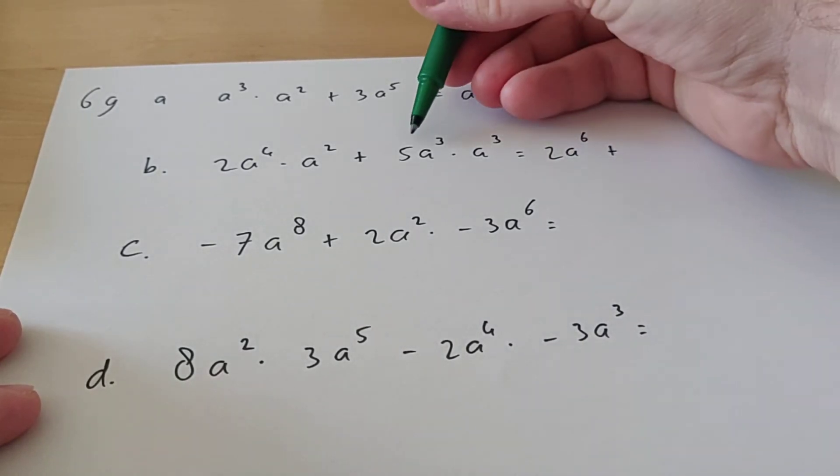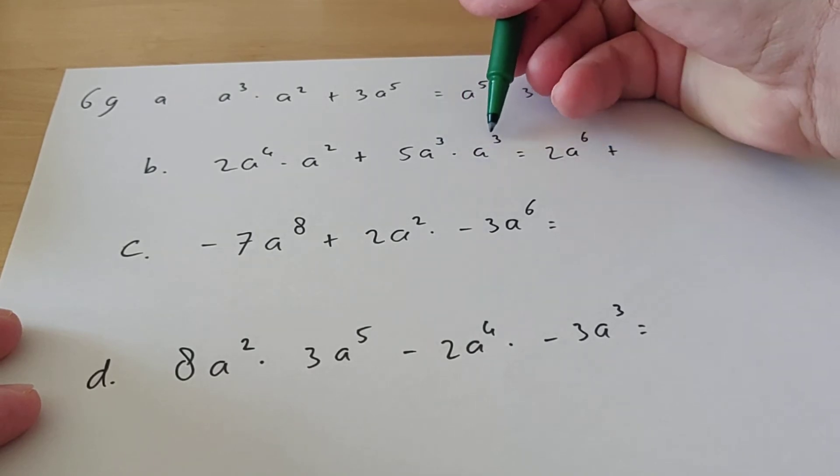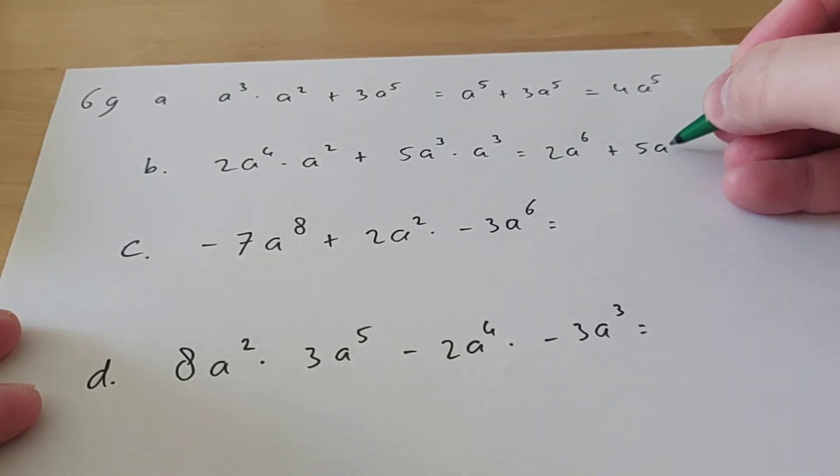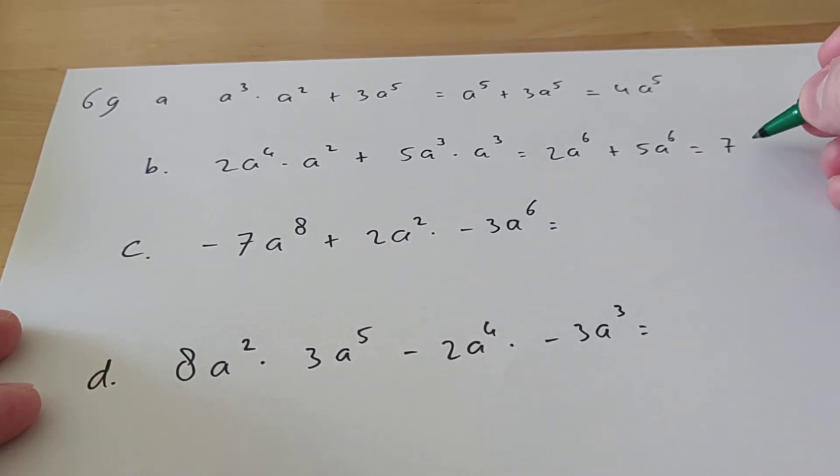Plus, and then here we have 5a^3 times a^3, so that's also a^6. And then when you add it, you get 7a^6.